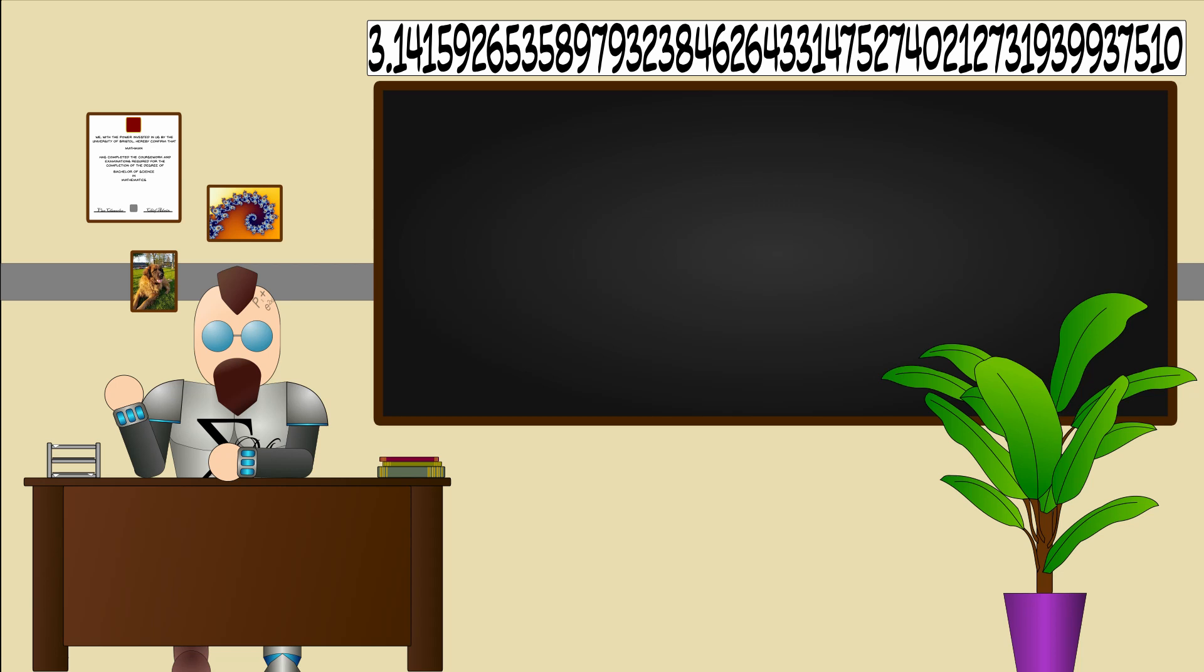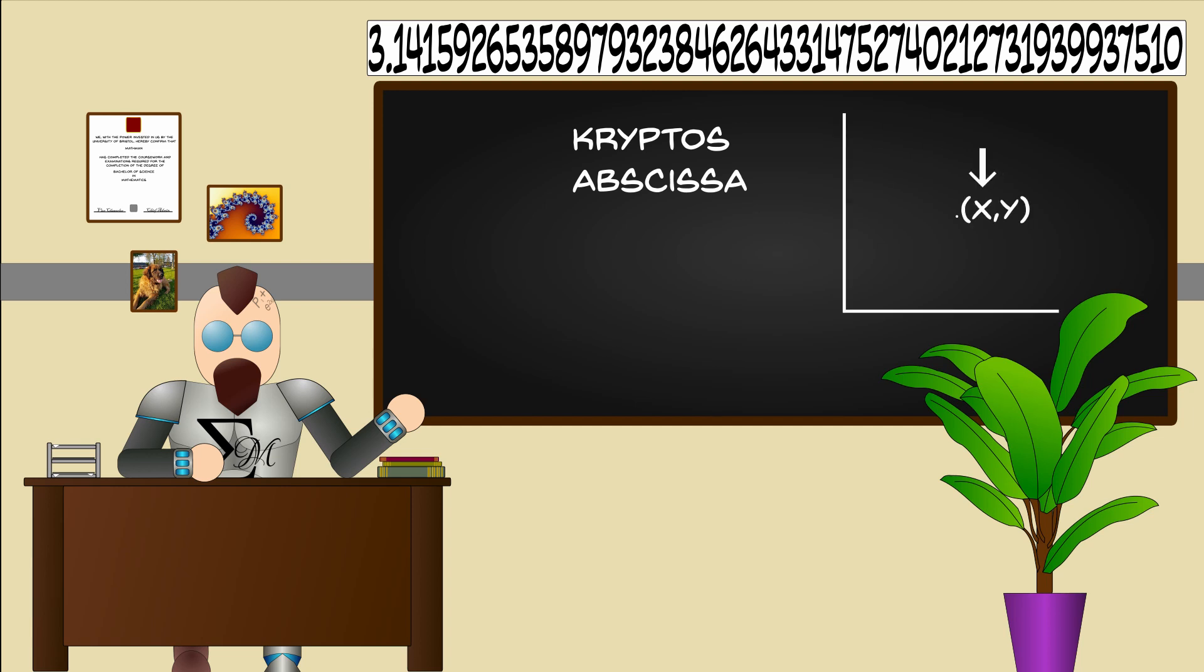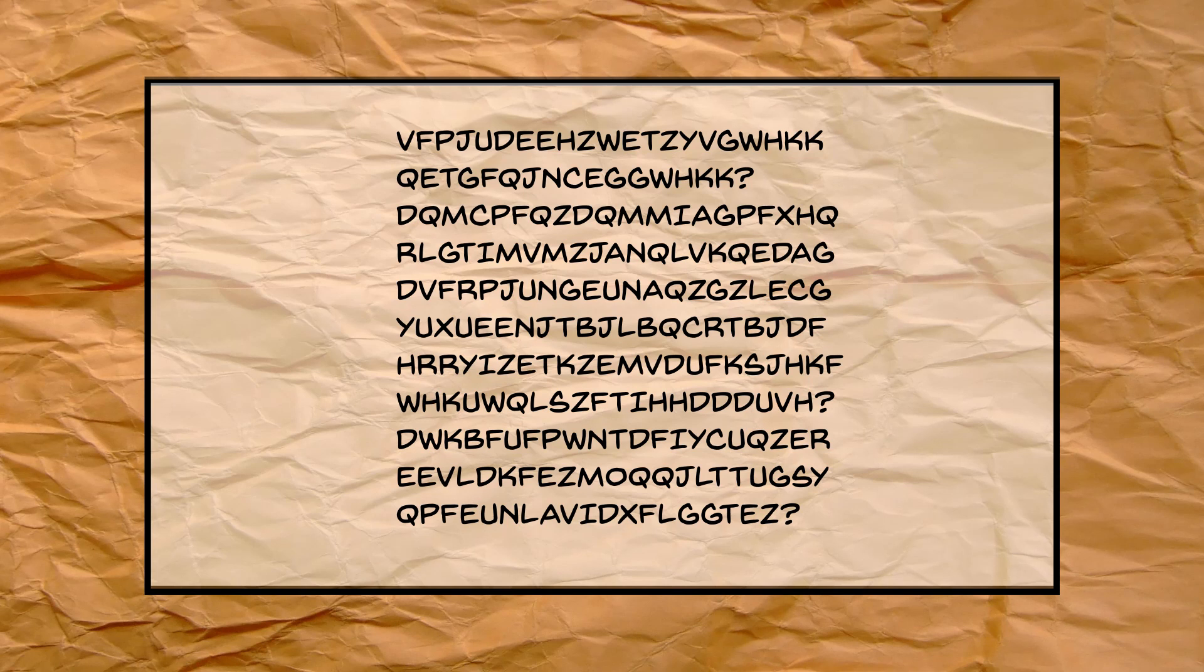In similar fashion the second section could be decoded with the keywords Kryptos and Abscissa, which some of you might recognize as the name for the first coordinate in a two coordinate plot. Despite the similar technique the solution turned out to be much more interesting.